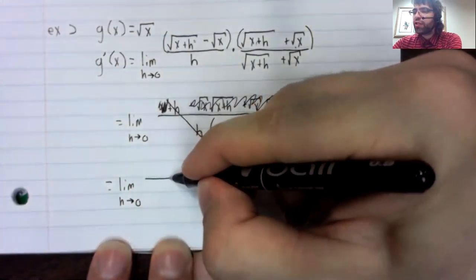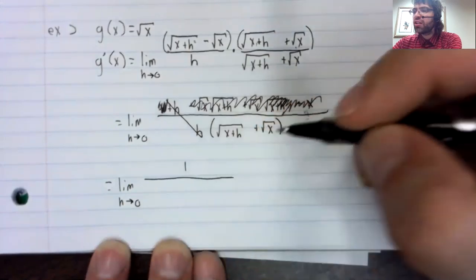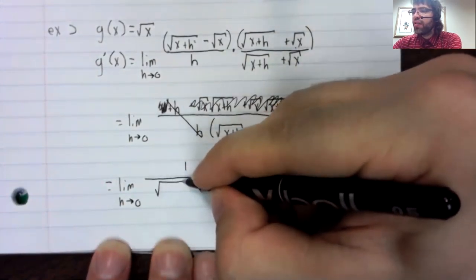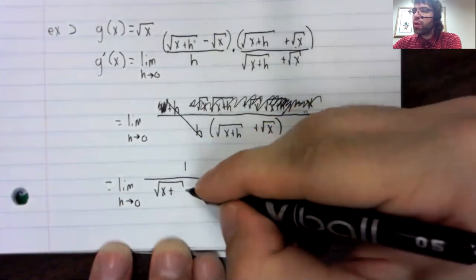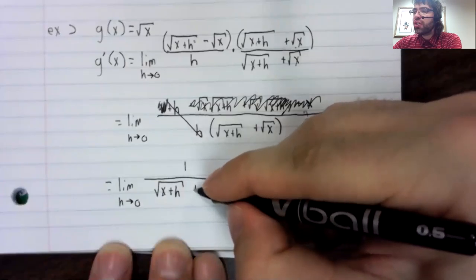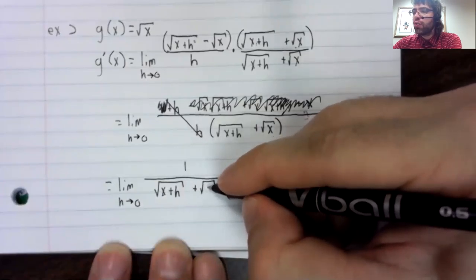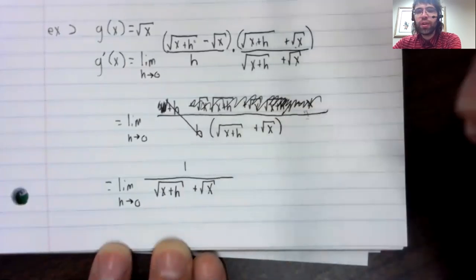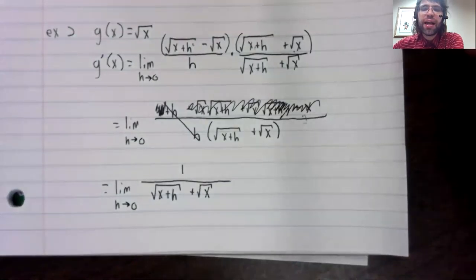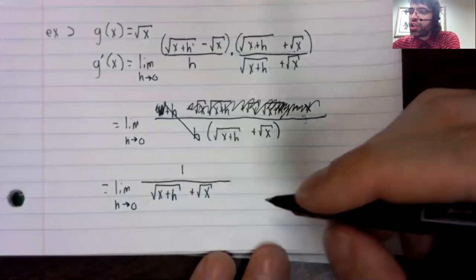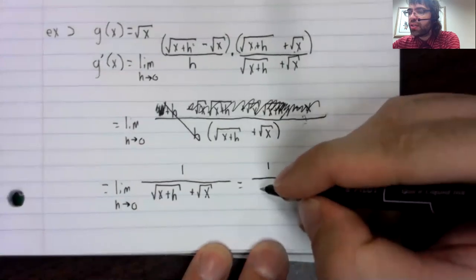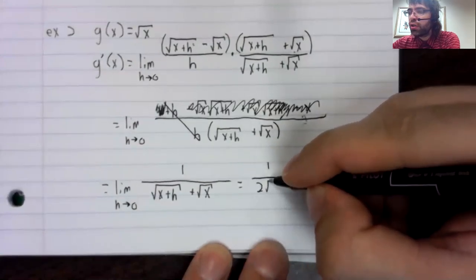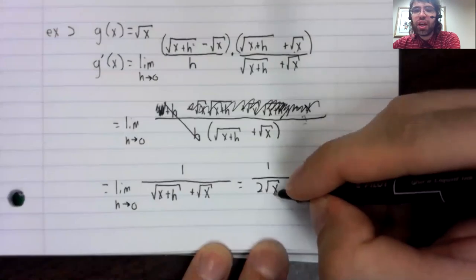And we're left with this limit. Now everything in this limit is continuous. If plugging in h equals zero doesn't give us a division by zero error, we can take this limit that way. And plugging in h equals zero does not give us a division by zero error. It gives us this.